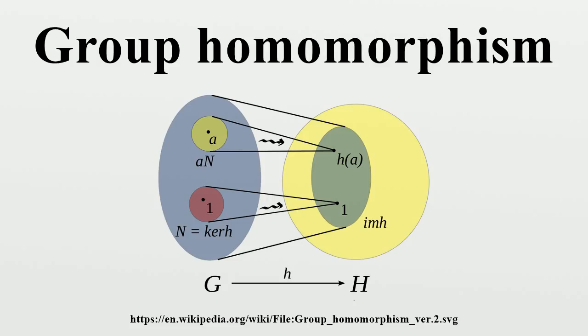Image and kernel: We define the kernel of h to be the set of elements in G which are mapped to the identity in H, and the image of h to be... The kernel and image of a homomorphism can be interpreted as measuring how close it is to being an isomorphism.